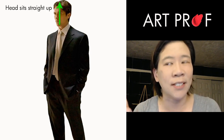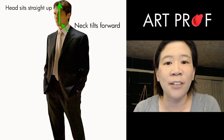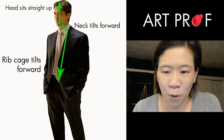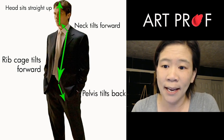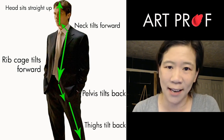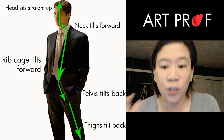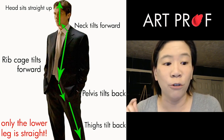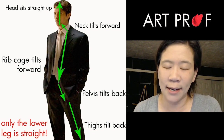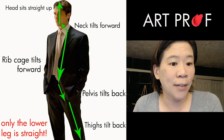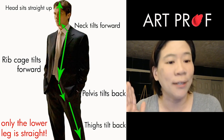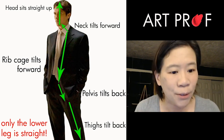The head pretty much sits up straight. The neck actually tilts forward. The ribcage tilts forward. And then the pelvis actually tilts back. The thighs tilt back. You have to be really attuned to those angles. It's not until you get to the lower leg that things get straight again. There are very few things on the figure that really sit upright and straight — everything has a slight tilt to it.